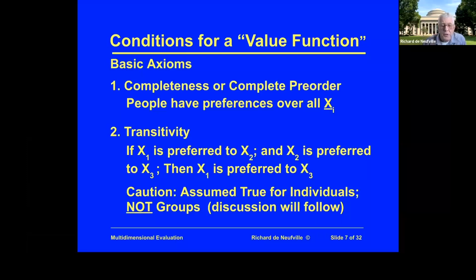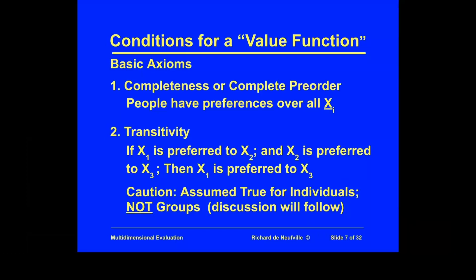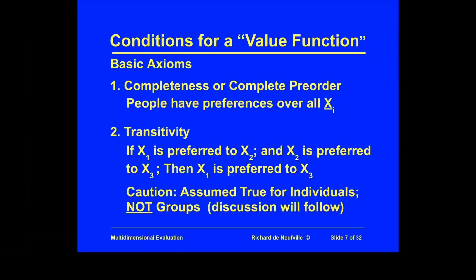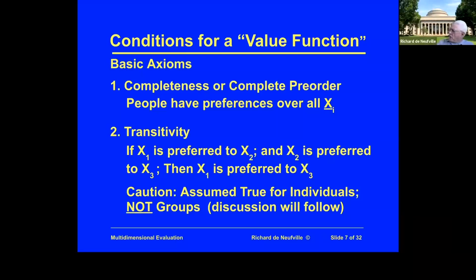A student comments on transitivity, noting these are some of Savage's axioms for subjective expected utility. Regarding transitivity, there is the Ellsberg paradox, which shows that under ambiguity transitivity doesn't always hold because people will tend to choose the non-ambiguous option.